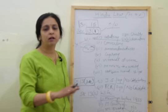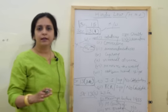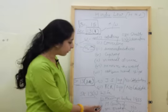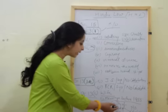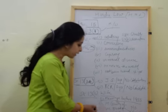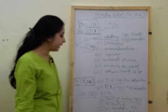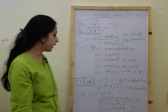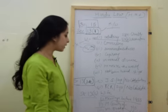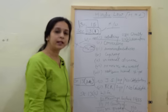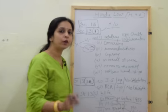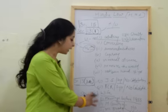The second provision under Section 13(2) is talking about certain guilty conduct. If the husband is guilty of committing rape, sodomy, or bestiality, in that situation it is a ground for divorce available to the wife only.